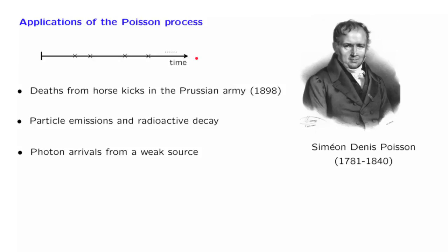For more modern applications, if you look at the financial markets and the times at which certain very unexpected events — like certain market shocks — occur, a model that is commonly employed is the Poisson process model. Although this is not an entirely accurate model, it provides a first approach to situations like this.